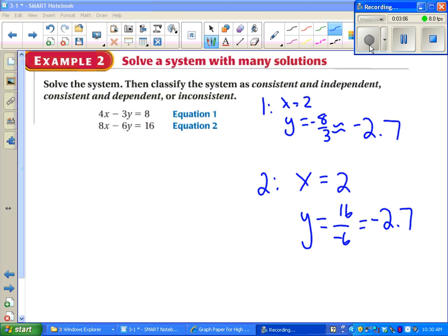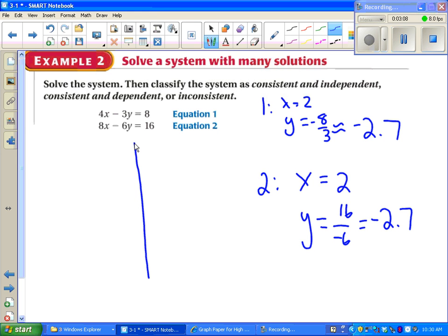Before I even graph, I notice that my x and y intercepts are exactly the same for both graphs. I don't even have to graph to know that these are going to be the same line. But we can do it anyway.